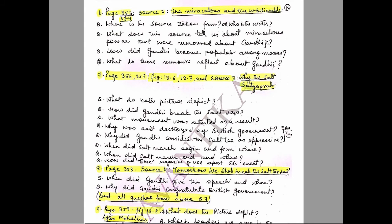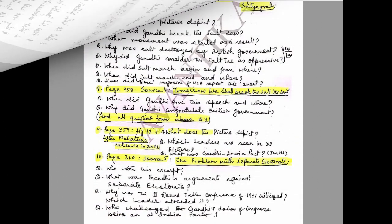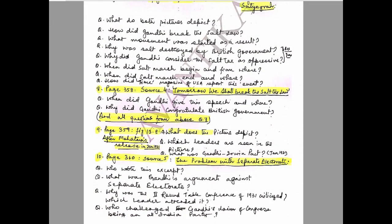Continuing Question 7: How did Time magazine of the USA report this event? Question 8: Page 358, Source 4 — 'Tomorrow We Shall Break the Salt Law.' Questions: When did Gandhi give this speech and where? Why did Gandhi congratulate the British government? Also include all questions from page 356–357.